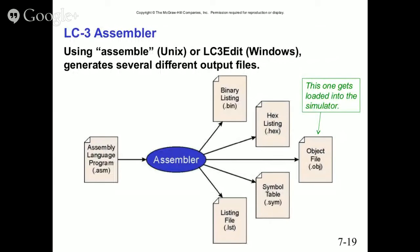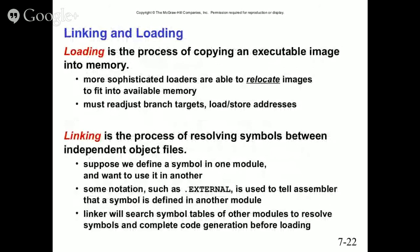When we go through this, you'll see how these files get created by running NASM. Loading is the process of copying the executable image into memory. More sophisticated loaders can relocate images to fit available memory, readjusting branch targets, load and store addresses. Linking is the process of resolving symbols between independent object files — you define a symbol in one module and use it in another. Notation such as 'external' tells the assembler a symbol is defined in another module, and the linker searches symbol tables of other modules to resolve symbols before loading.